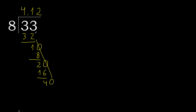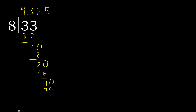Complete with 0 — point: 40. 8 multiplied by 5 is 40. Subtract 0. Remainder is 0, therefore finish. 33 divided by 8 is complete here.